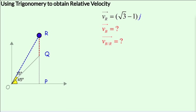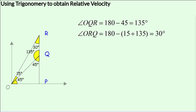We have to find the velocity of the blue ball with respect to the ground and the velocity of the blue ball with respect to the red ball. From the geometry of the figure, angle O-Q-R will be 135 degrees, and the angle O-R-Q will be 30 degrees.